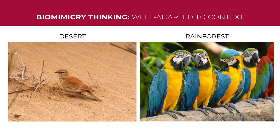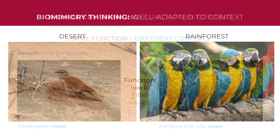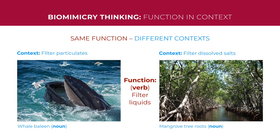One of the purposes of biomimicry is to create designs that are well-adapted to context. The same function can be met in different ways or using different strategies in different contexts. For example, the function of being a bird in the desert, where there are very scarce resources, is met with a completely different strategy than the function of being a bird in the Amazon rainforest, where there are an abundance of resources. Similarly, filtering water involving particulates uses a different strategy than filtering water filled with dissolved salts.